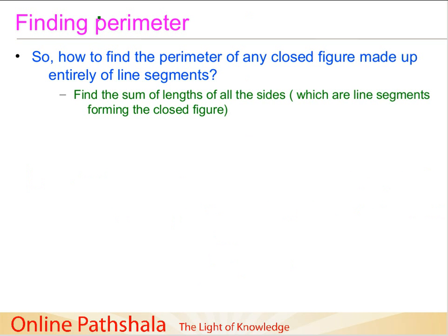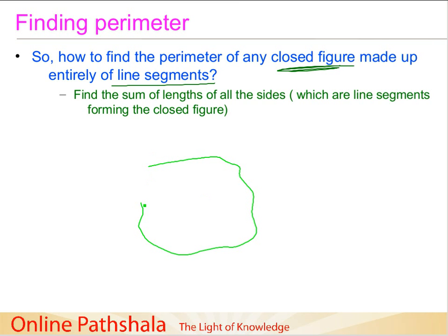Let's summarize the method for finding perimeter. All the figures we worked with were closed figures made entirely of line segments. Whenever you have such a figure, all you need to do is find the sum of the lengths of all the sides. This approach can also be used for approximation — for example, if you have an irregularly shaped piece of land, you can approximate its boundary using line segments.